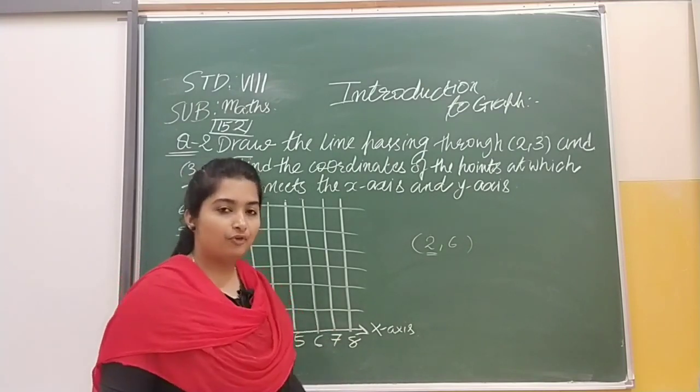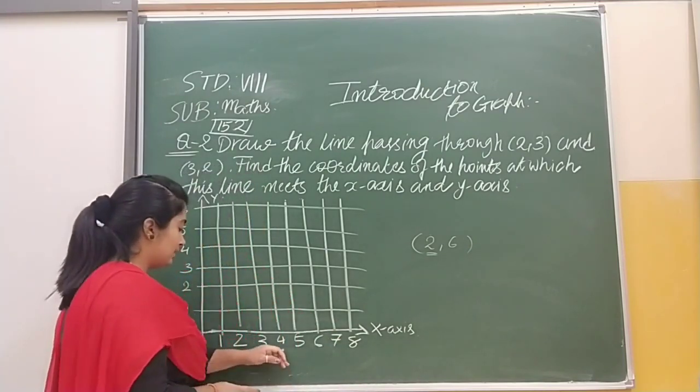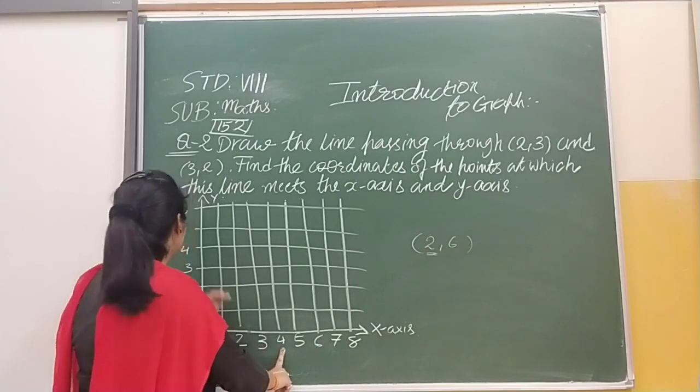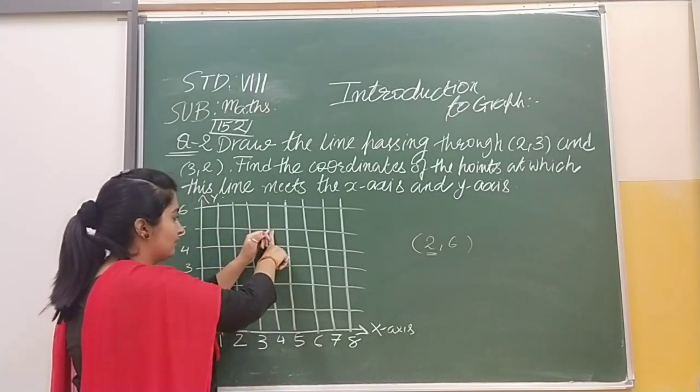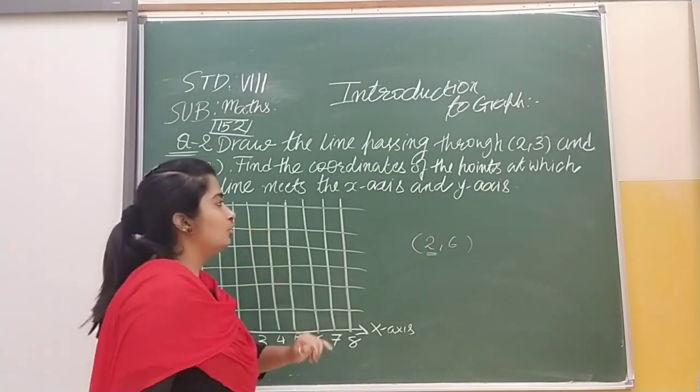For example, if you're given (4,5) and you have to put the (4,5) point, then 4 is on the x-axis here and 5 is on y-axis. So here our (4,5) point will be found.